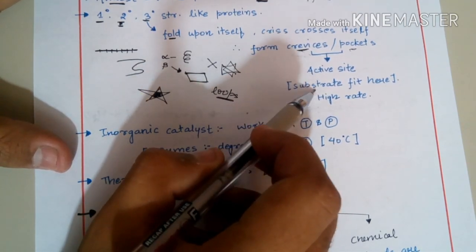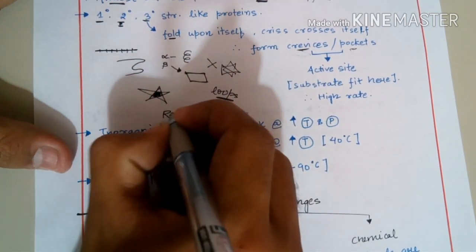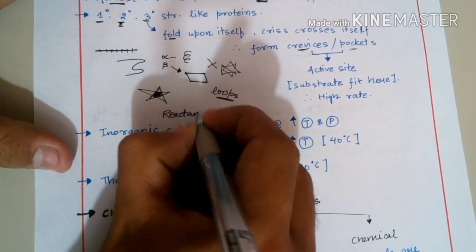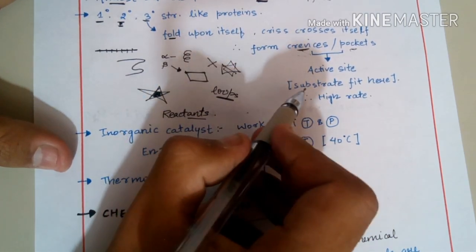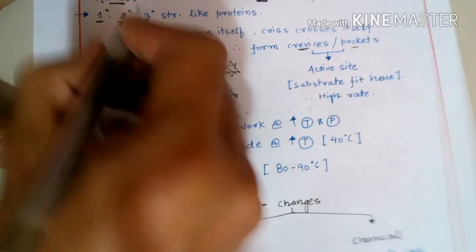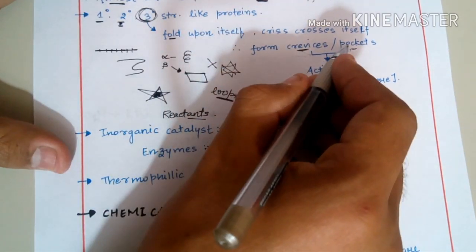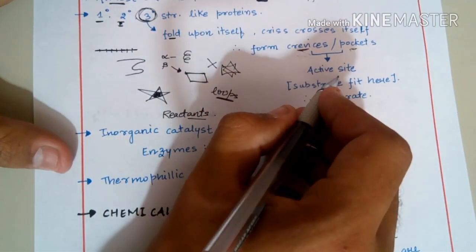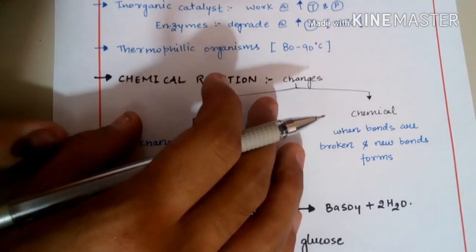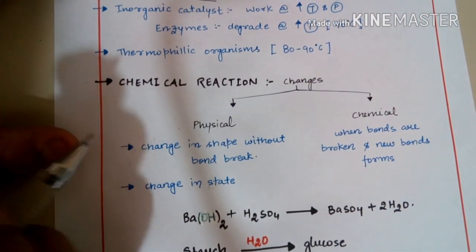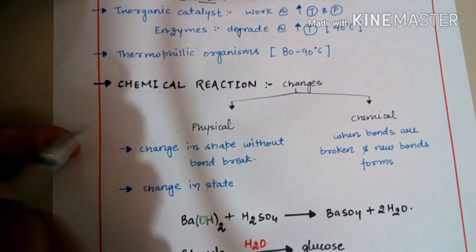The substrate is the molecule that has to be catalyzed — essentially the reactants. Substrates bind to the enzyme at specific positions in the tertiary conformation, which are crevices or pockets known as active sites. So enzymes have conformations similar to proteins: primary, secondary, tertiary, and so on.